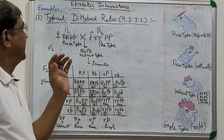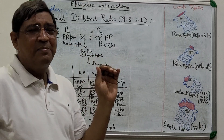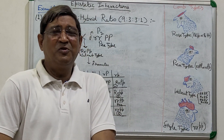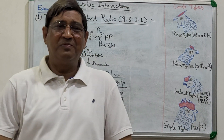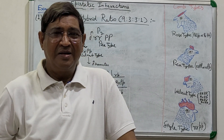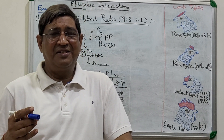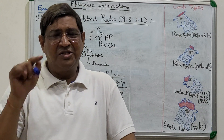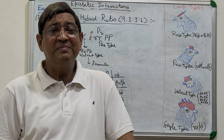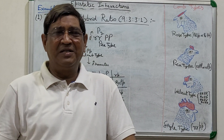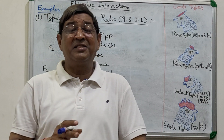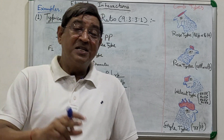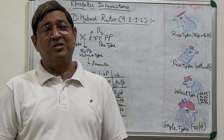The first I'm going to start with is the typical dihybrid ratio. If you see 9:3:3:1, you might be confused with the Mendelian ratio of independent assortment. I would like to emphasize: recall that Mendel took two characters — the shape of the grain and the color of the grain — two different characters controlled by two different genes located on different chromosomes. That is why he got independent assortment.